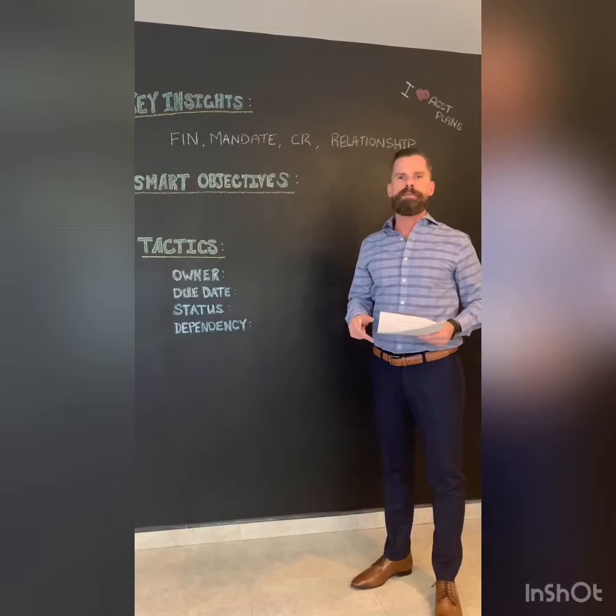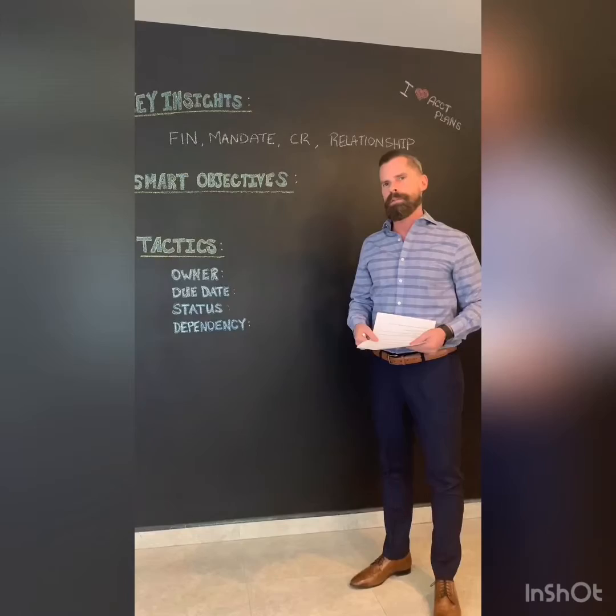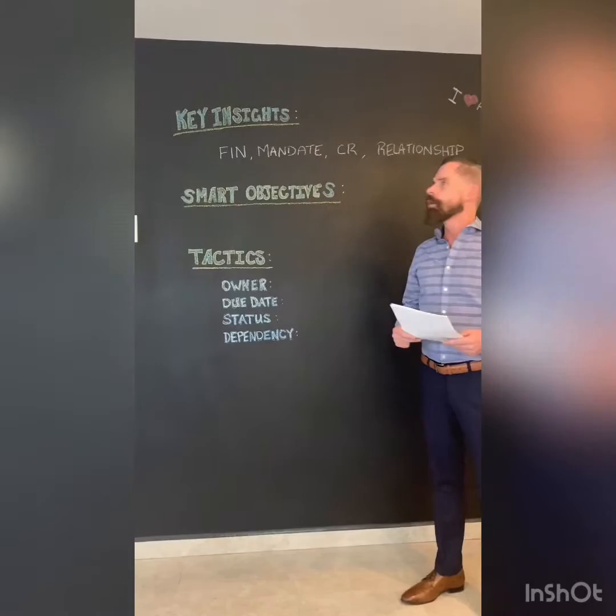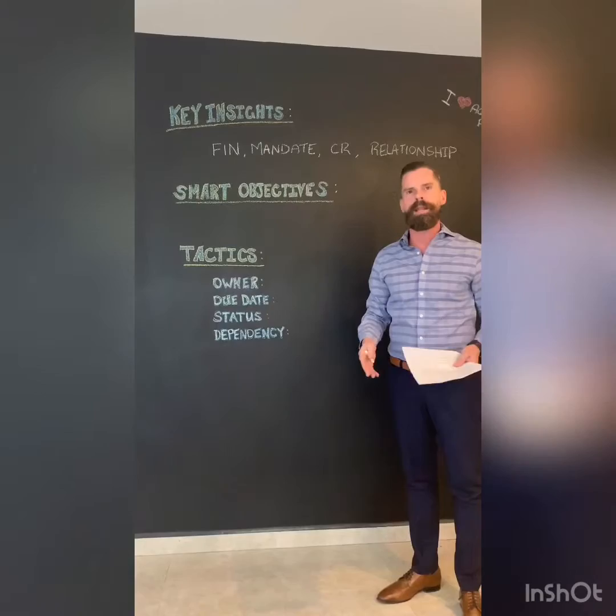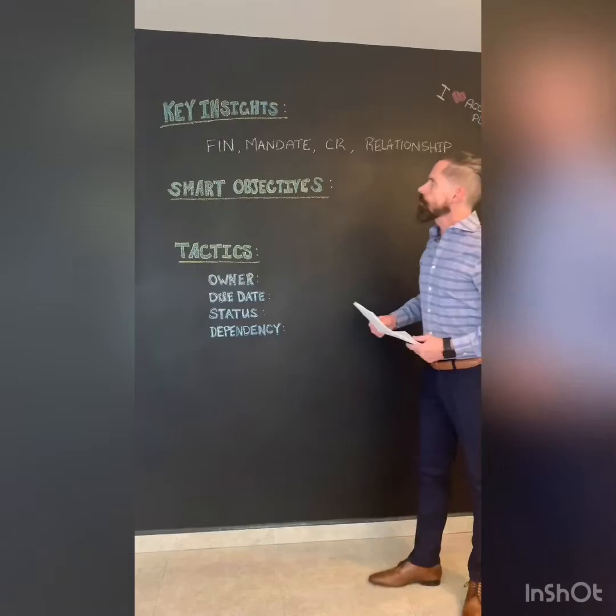This is the same as what Dave Holt gave us in the training, but hopefully I'll go through a couple of examples and it will become a little bit easier for you. The real core section of the account plan — if you look at the template — is the key insights, the smart objectives, and the tactics. This is the actual story you're trying to tell about the account; this is where the strategy and the relationship really comes to life.